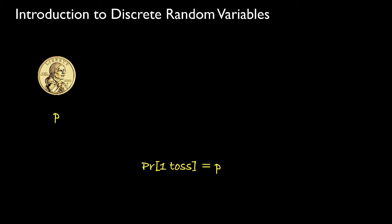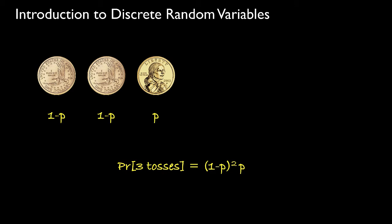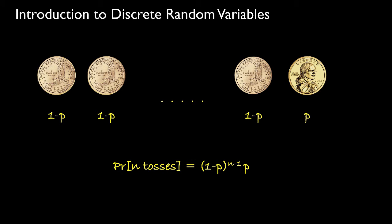If we get heads on the first toss, then we will only need to toss the coin once, and this will happen with probability p. The probability that we see tails on the first toss is 1 minus p, and the probability that we then see heads on the second toss is p. So the probability that we'll need two tosses is 1 minus p times p. Using this same logic, the probability of heads on the third toss is 1 minus p squared times p, and on the nth toss it is 1 minus p raised to the n minus 1 power times p.